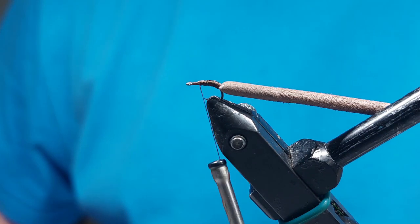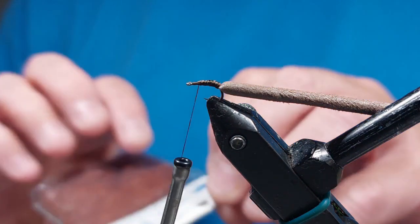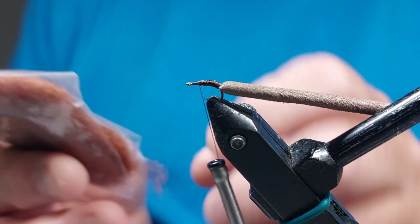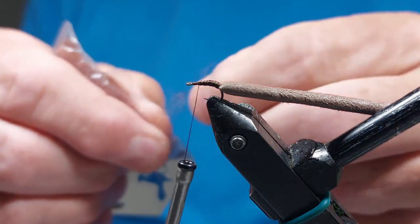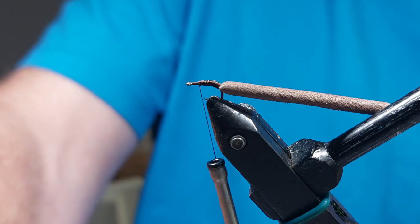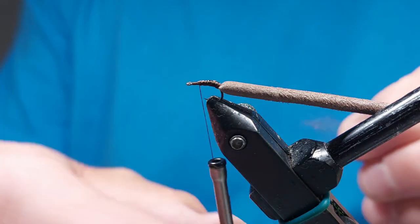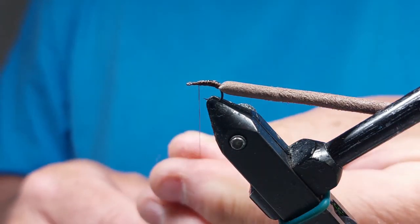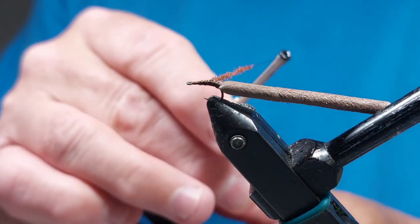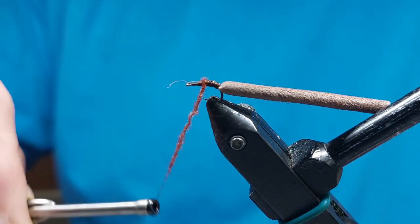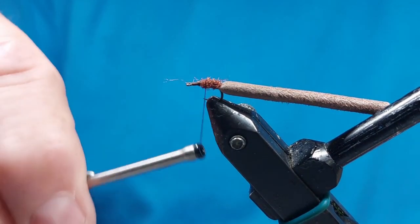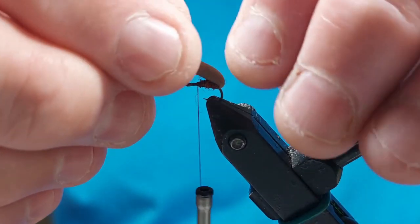The dubbing I'm going to use is dark brown and it's antron. Now this is going to be for the body. It's going to make a nice underbody and when you brush it out a bit it looks like little legs underneath which obviously is attractive to the fish. So we'll dub that onto our brown thread. So we'll take the thread through it a little bit, back to the front and then we'll bend this bit over.